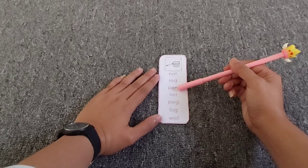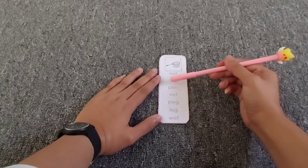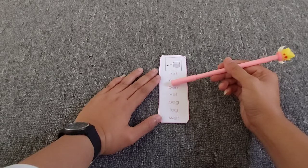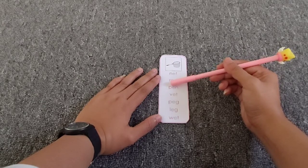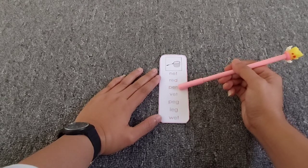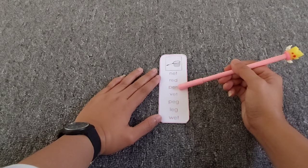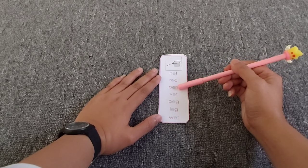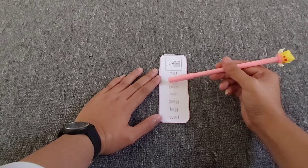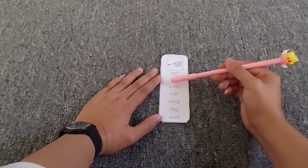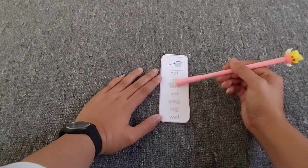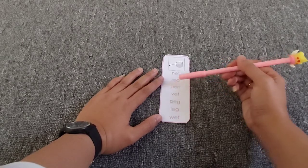bagaimana cara kita membaca kata ini? P. E. N. P. E. N. Dibaca? Pen. You are correct again. Good job. P. E. N. Dibaca? Pen. P. E. N. Pen. Pen.